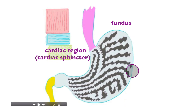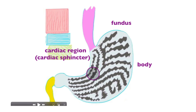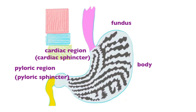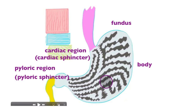The fundus of the stomach is generally superior to the cardiac region. The great majority of the stomach is the body. Then there is the pyloric region, which contains a sphincter that controls the movement of chyme into the duodenum and helps prevent backflow from the small intestine. The stomach is lined by folds known as rugae.